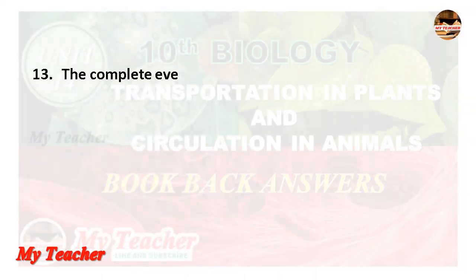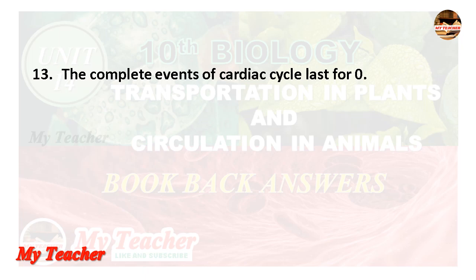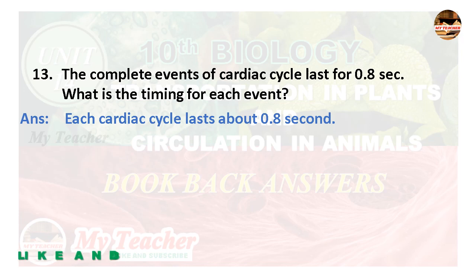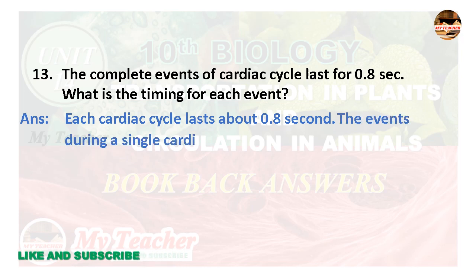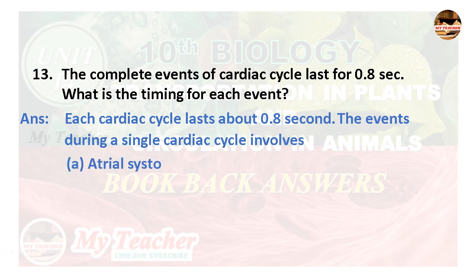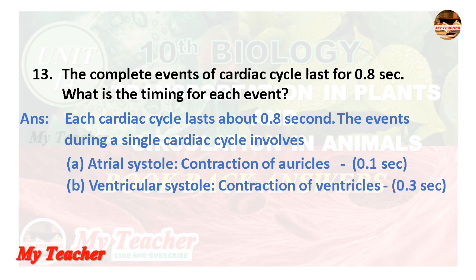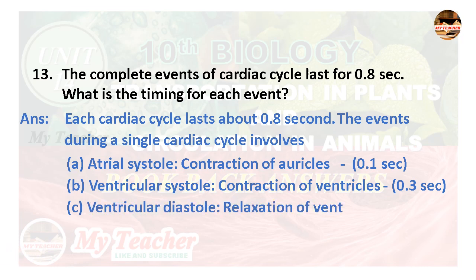Thirteenth question: The complete events of the cardiac cycle last for 0.8 seconds. What is the timing for each event? Answer: Each cardiac cycle lasts about 0.8 seconds. A. Atrial systole (contraction of auricles) — 0.1 seconds. B. Ventricular systole (contraction of ventricles) — 0.3 seconds. C. Ventricular diastole (relaxation of ventricles) — 0.4 seconds.